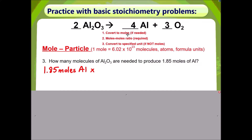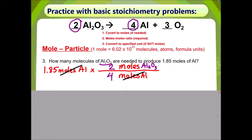Step 1 says convert to moles if needed. Our given is already in moles, therefore we can go straight to Step 2, which is moles-to-moles ratio. In the moles-to-moles ratio, we must have moles of aluminum on the bottom so that it can cancel out with the given. Moles of aluminum oxide will be on top because the question wants us to get to aluminum oxide. Filling in the blanks using coefficients from the balanced equation: 2 moles of aluminum oxide over 4 moles of aluminum.